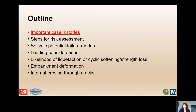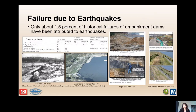Some important case histories of failure due to earthquakes: Sheffield Dam failed completely in 1925 due to foundation liquefaction. Lower San Fernando was very close to failing due to embankment liquefaction caused by a magnitude 6.9 earthquake in 1971, with only about 5 feet of freeboard remaining. Fujinuma Dam failed in 2011 due to foundation liquefaction caused by the Tohoku magnitude 9.0 earthquake with ground accelerations around 0.3g.